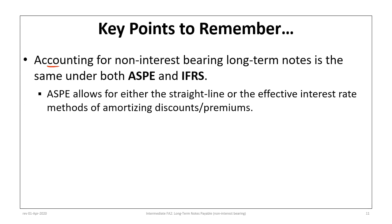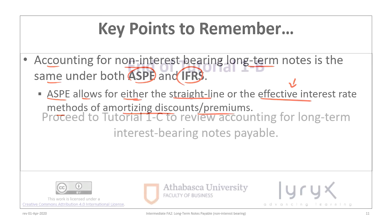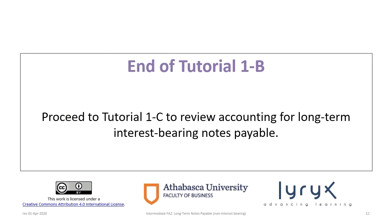Accounting for long-term non-interest bearing notes is the same under both ASPE and IFRS. A minor exception under ASPE is that the standard allows either the straight-line method or the effective interest rate method for amortizing discounts or premiums. This problem used the effective interest rate approach, which is the more commonly followed method. This concludes Tutorial 1b on long-term non-interest bearing notes — proceed to Tutorial 1c to review accounting for long-term interest-bearing notes.